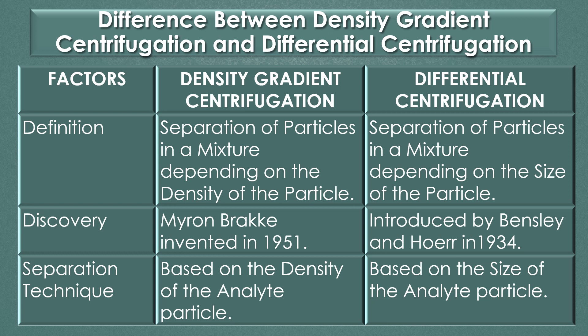Discovery: Mirron Braki invented the first kind of density gradient centrifugation in 1951. Differential centrifugation was first introduced by Bensley and Hoer in the year 1934, who obtained a large granule fraction containing the nuclei and mitochondria.